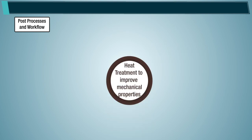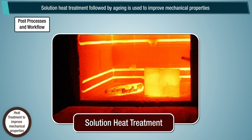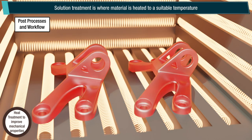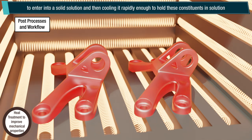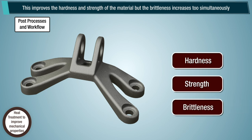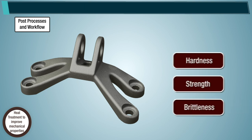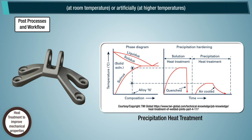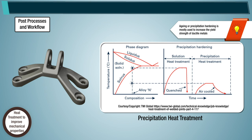Heat treatments for mechanical properties: solution heat treatment followed by aging is used to improve mechanical properties such as material strength and ductility. Solution treatment involves heating material to a suitable temperature, holding it long enough to cause one or more constituents to enter into a solid solution, then cooling it rapidly enough to hold these constituents in solution. This improves hardness and strength, but brittleness increases simultaneously. Subsequently, precipitation heat treatments allow controlled release of these constituents either naturally at room temperature or artificially at higher temperatures. Note: aging or precipitation hardening is mostly used to increase the yield strength of ductile metals.